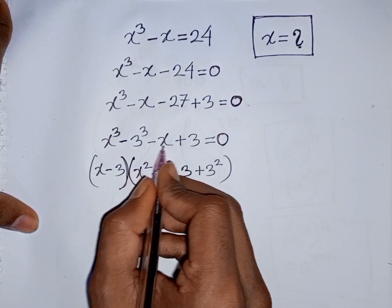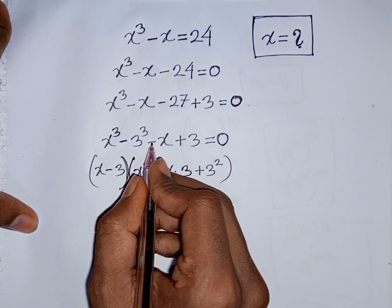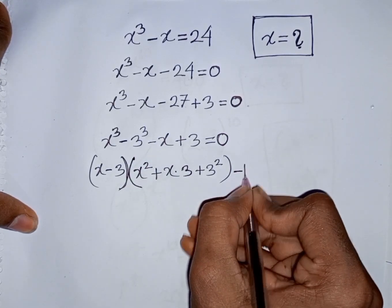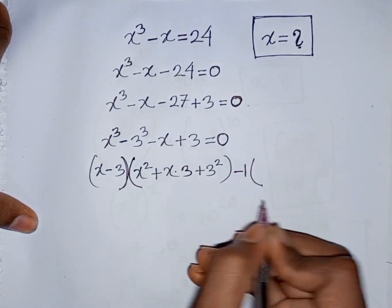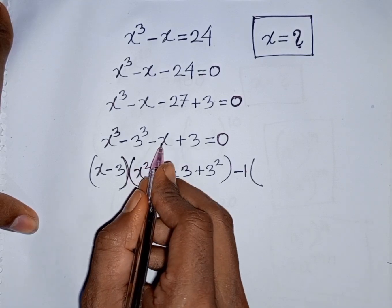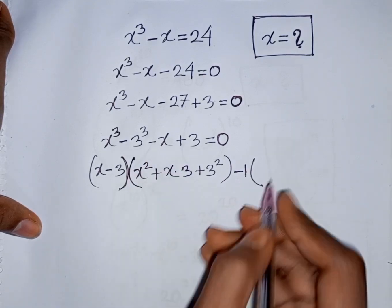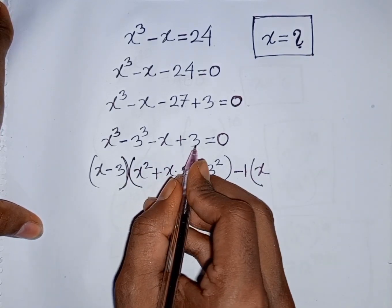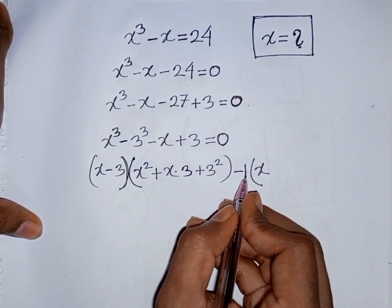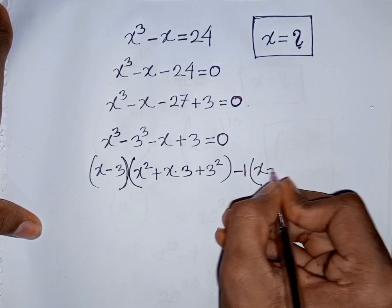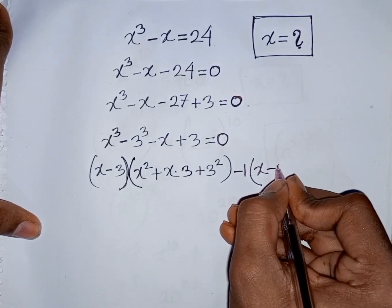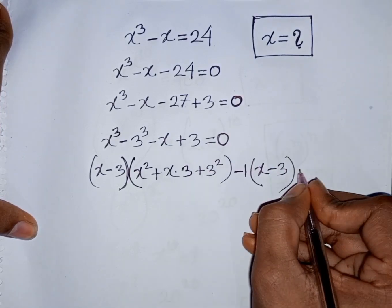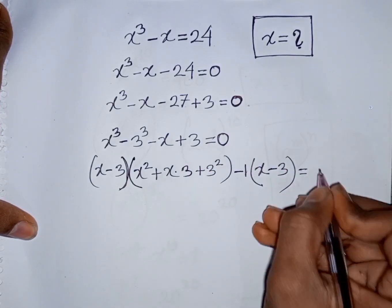Then from the remaining term we take out common factor minus 1, so minus 1 comes out of the bracket. This gives us x divided by minus 1, which means x, then plus 3 divided by minus 1, which means minus 3. So bracket closes equal to 0.